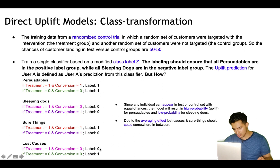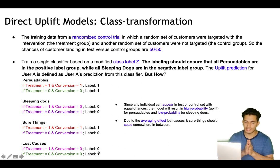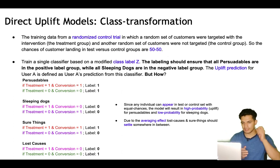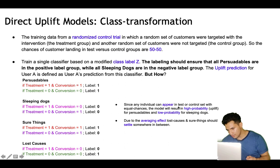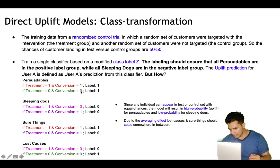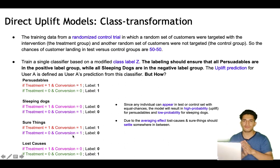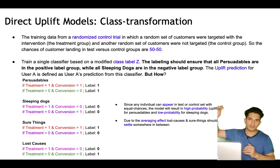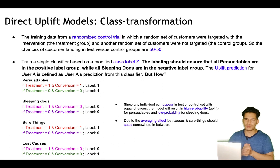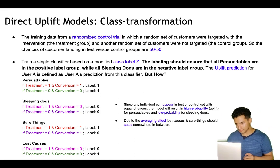Since any individual can appear in test or control with equal chances, the model will result in high probability for persuadables and low probability for sleeping dogs. Due to the averaging effect — half the customers with a given property have label 1, half have label 0 — sure things and lost causes should settle somewhere in between at 0.5. So high probability for persuadables, low probability for sleeping dogs, and sure things and lost causes settle around 0.5. The probability output is therefore the probability of being a persuadable, which is the direct uplift.